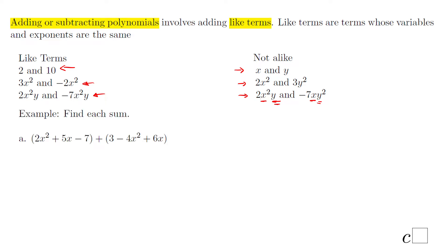Now let's see an example. Find each sum. Starting with part A: we have (2x² + 5x − 7) + (3 − 4x² + 6x). Since this is addition, you can drop the parentheses right away. Then look for like terms. We notice 2x² and negative 4x², so we have 2x² minus 4x², which is 2 minus 4, giving us negative 2x².